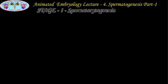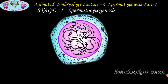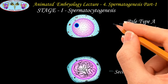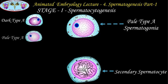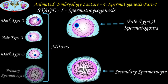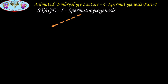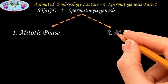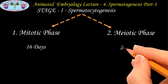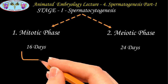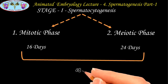Let us see stage 1, spermatocytogenesis. This is the process of formation of a haploid secondary spermatocyte from the diploid pale type A spermatogonia. This stage includes the formation of a series of different types of spermatogonia by mitotic division, and then the formation of a secondary spermatocyte by meiotic division. This stage includes two sub-stages: the mitotic phase, which involves about 7 mitotic divisions and takes a minimum of 16 days, and the meiotic phase, which takes a minimum of 24 days. As a whole, spermatocytogenesis takes a minimum of 40 days to complete.